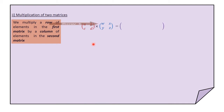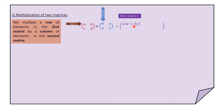As we said, we multiply a row of elements in the first matrix by a column of elements in the second matrix. So the first row — that is AB — is multiplied by the first column of the second matrix, WY, to give us the element AW plus BY. You multiply A times W, then plus B times Y, and solving this gives the element in the first row, first column of the resulting matrix.